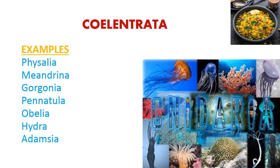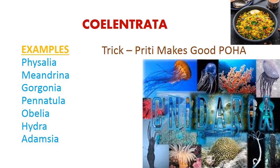The trick is 'Preeti makes good poha.' From 'Preeti' it's Physalia, from 'Makes' it's Meandrina, from 'Good' it's Gorgonia. Then I have split the spelling of POHA: from 'P' it's Pennatula, from 'O' it's Obelia, from 'H' it's Hydra, and from 'A' it's Adamsia. The next phylum is Ctenophora.